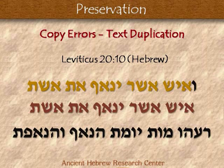So what happened? When the scribe was writing his copy, he got to the word 'beish,' saw the word 'ish,' and continued on — 'asher yinaf et eshet.' He probably walked away when he dipped his ink. Then going back, he started back over at 'ish asher yinaf et eshet,' and then continued on with the verse. So he duplicated the text.